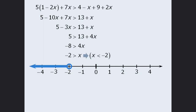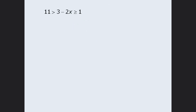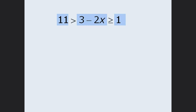Any point on the blue line here will be a solution to the original inequality. Now, sometimes you will encounter inequalities with 3 parts. These compound inequalities can be solved using the same techniques we have examined so far. To isolate x in this example, we'll first subtract 3 from all 3 parts. So 11 minus 3 equals 8. When we subtract 3 from 3 minus 2x, we get negative 2x. And when we subtract 3 from 1, we get negative 2.